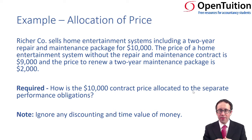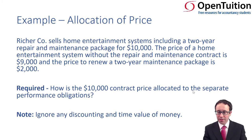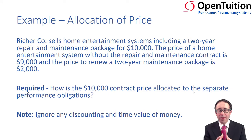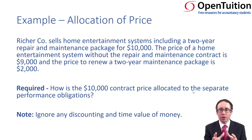We have two performance obligations: the entertainment system, which is the goods, and the repair and maintenance package, which is the service. The stand-alone price of a home entertainment system without the repair and maintenance contract is $9,000 — that's the price if you were just buying the goods separately with no repair and maintenance contract.